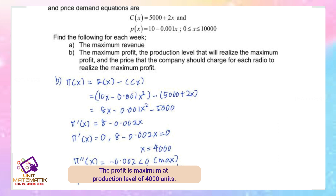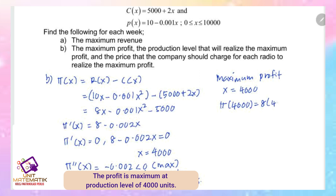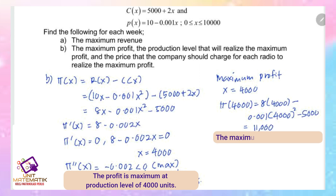Now we use this quantity to find the maximum profit. Substituting x = 4000 into the profit function: π(4000) = 8 × 4000 - 0.001 × 4000² - 5000. The maximum profit equals RM11,000.